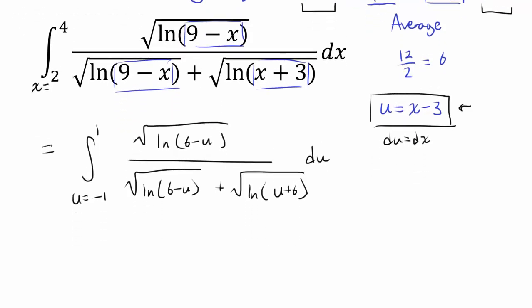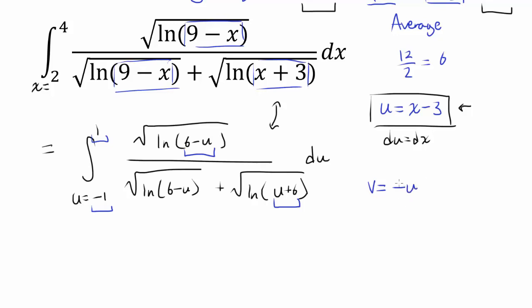We can look at the relationships between the expressions inside the integrand. We have (6 minus u) and (6 plus u), with u symmetric with respect to 0. The natural substitution to make is v equals negative u, because then 6 minus u becomes 6 plus v, and u plus 6 becomes 6 minus v. So we have another symmetry going on — let's make this natural substitution.